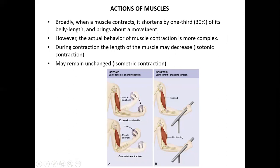When a muscle contracts it can shorten by almost 30% and bring about movement. However, there are two types of contractions. In isotonic contraction, the length of the muscle decreases during contraction. In isometric contraction, the muscle contracts but the length of the muscle does not change.